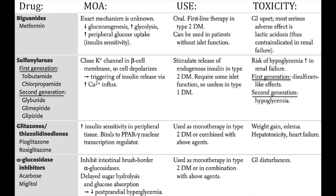The next class of oral hypoglycemics is the sulfonylureas. Sulfonylureas act on the beta cells of the pancreas to stimulate insulin release. The idea is that you can increase the output of endogenous insulin instead of having the patient take regular shots of insulin. The mechanism involves closing potassium channels in beta cells, which causes the membrane to depolarize and opens voltage-gated calcium channels. The influx of calcium ions triggers exocytosis of insulin granules, hence insulin release. Sulfonylureas also contain sulfur groups, so if you have a patient with a sulfur allergy, you will need to avoid these drugs.